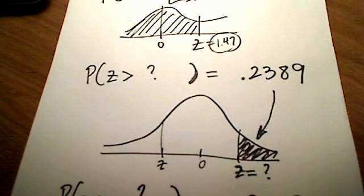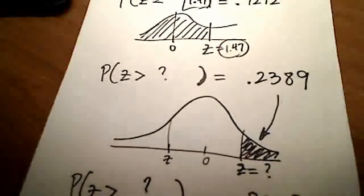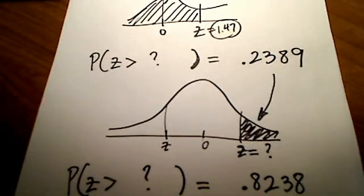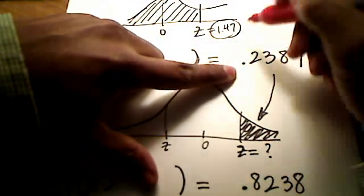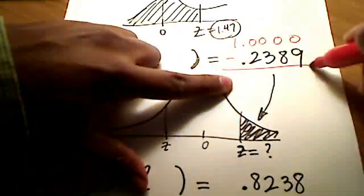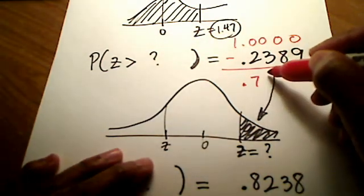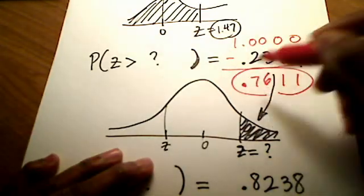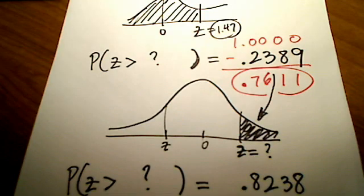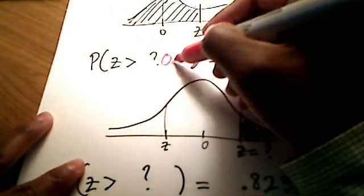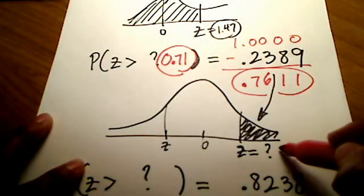This is a little bit tricky, because I'm not looking up .2389 in my table. Keep in mind this table is a shaded-to-the-left table, even for both positive and negative z-scores. So what I'm going to look up instead is the complement of this number — I take .2389 away from 1, which gives .7611. Looking up .7611 on the table, the corresponding z-number is 0.71 — positive 0.71.